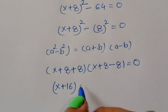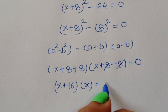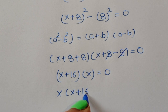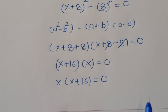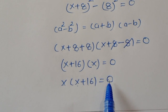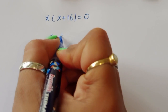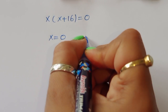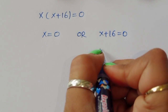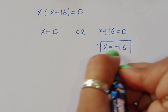So x plus 8 plus 8 becomes x plus 16, and x plus 8 minus 8 becomes x. So we have x times (x + 16) equal to 0. Again we get two equations: first one is x equal to 0, and the next one is x plus 16 equal to 0, therefore x is equal to minus 16.